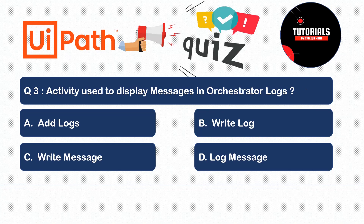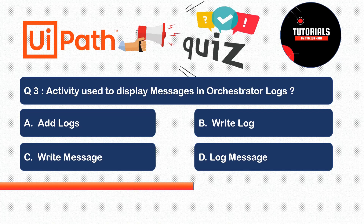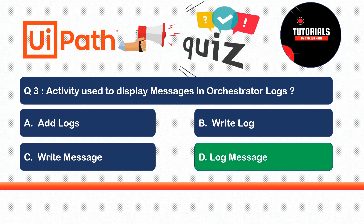Question 3: What is the activity used to display a message in the Orchestrator logs? I have UiPath Studio and I want logs displayed in the Orchestrator. Options: A) Add Log, B) Write Log, C) Write Message, or D) Log Message. The correct answer is Log Message. Using this activity, you set a level and that message becomes available in the Orchestrator logs under the Jobs panel when the job is running.